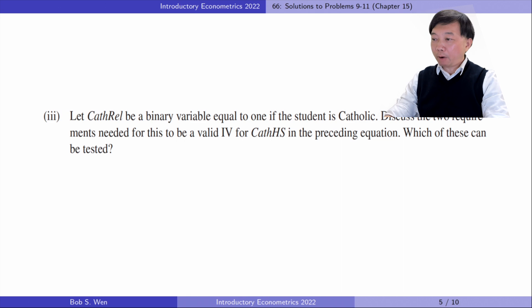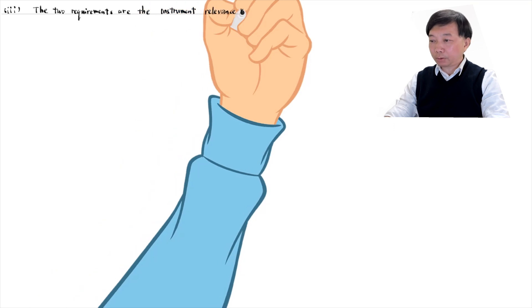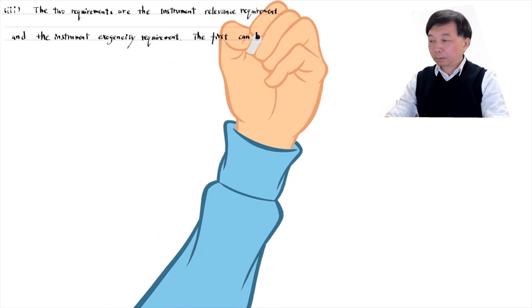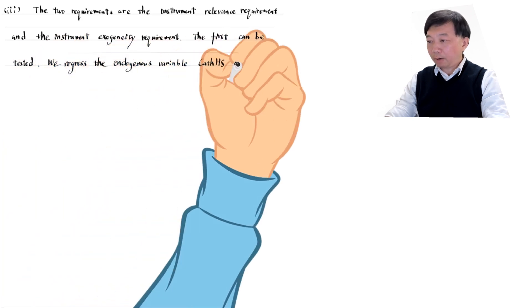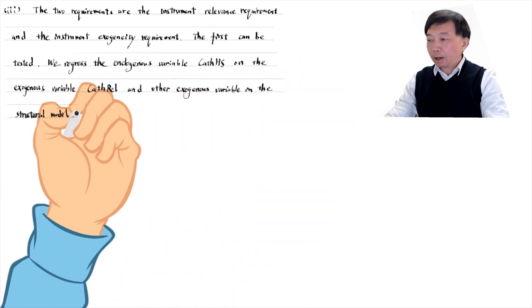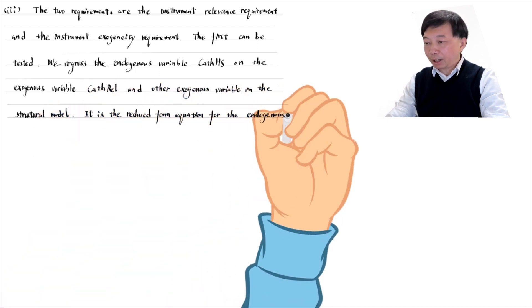In part 3, we have a binary variable equal to 1 if the student is Catholic. Discuss the two requirements needed for this to be a valid IV for the variable whether attending a Catholic high school. The two requirements are the instrument relevance requirement and the instrument exogeneity requirement. The first can be tested. We regress the endogenous variable of whether the student attends a Catholic high school on the exogenous variable of whether the student is Catholic and other exogenous variables in the structural model. This is the reduced-form equation for the endogenous variable or the first-stage regression model.